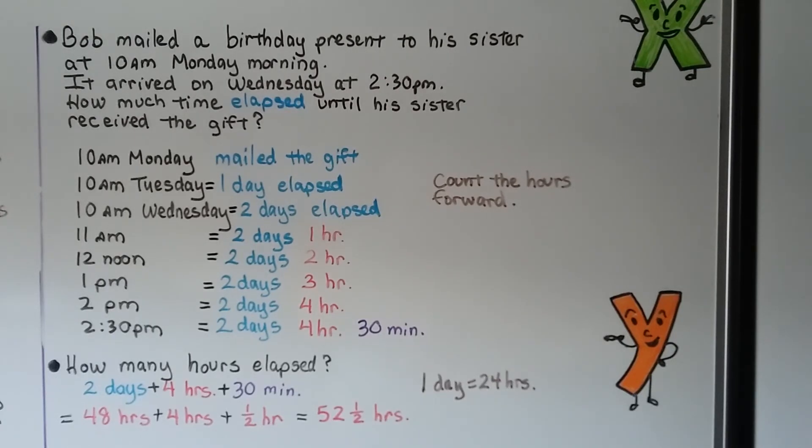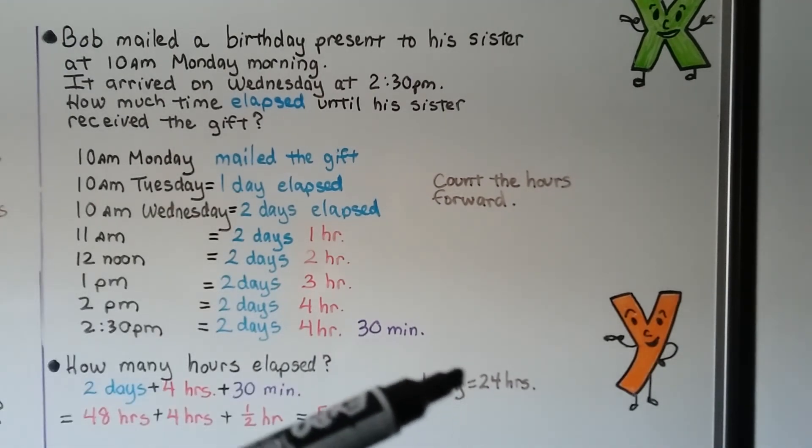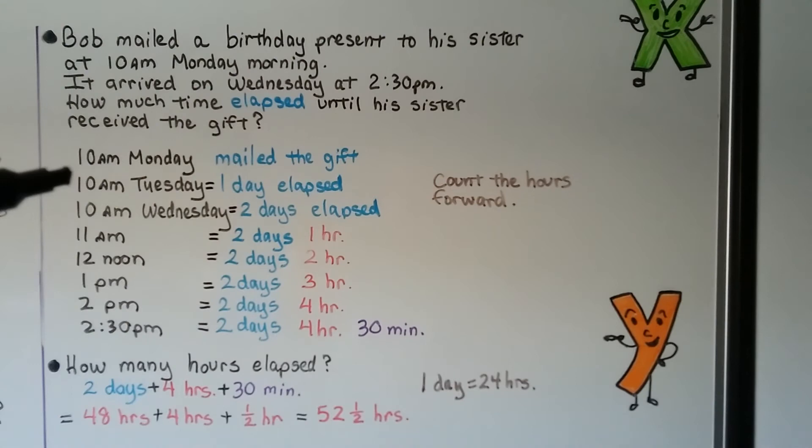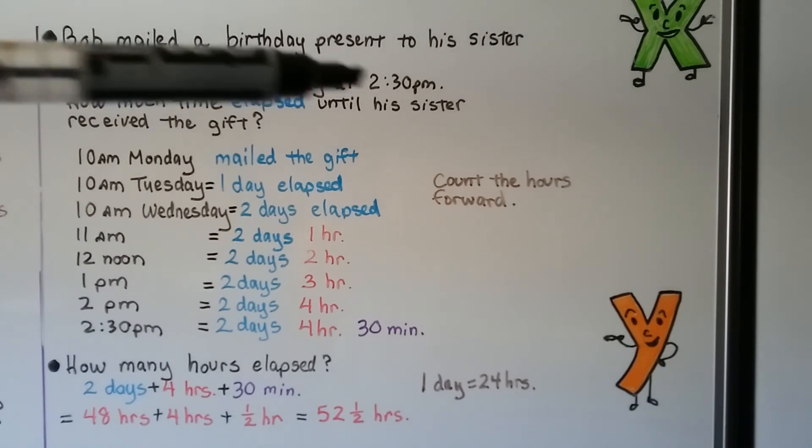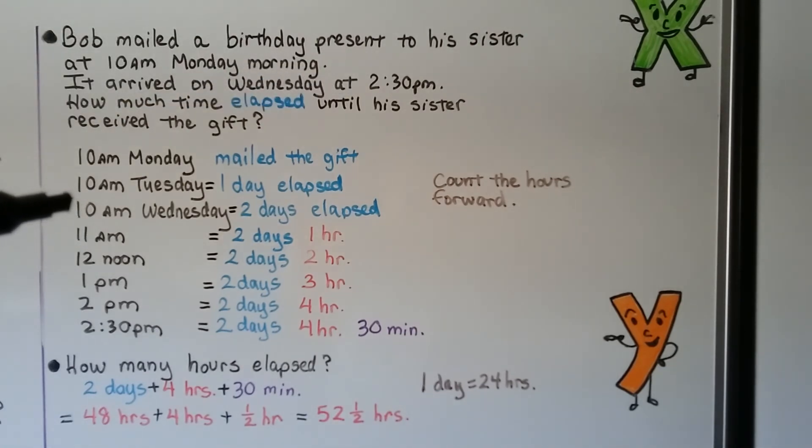Bob mailed a birthday present to his sister at 10 a.m. Monday morning. It arrived on Wednesday at 2:30 p.m. So how much time elapsed until his sister received the gift? He mailed it at 10 a.m. on Monday. So if we go to 10 a.m. Tuesday, that's one whole day that elapsed. That's 24 hours. 10 a.m. on Wednesday, that's two days that elapsed. Well, she got it at 2:30 p.m. on Wednesday and we're only at 10 a.m.